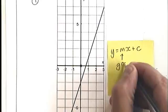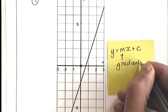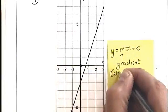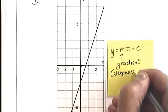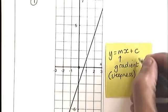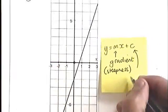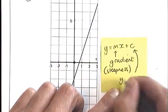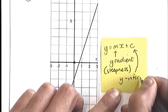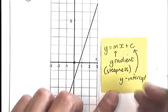The gradient, which is really the steepness of the graph, and this number here, which is given the label c, which is called the y-intercept of the graph.